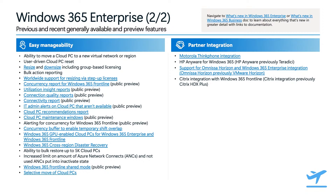We also added GPU-enabled cloud PCs to our lineup across Windows 365 Enterprise and frontline. We released a powerful cost management tool for endpoint admins with resize and downsize capabilities in Windows 365, now with support for group-based licensing as well as support for resize through step-up licensing. Our reporting and alerting capabilities were enhanced across many dimensions, including connectivity, availability alerting, utilization insights, and even cloud PC recommendations that help IT admins choose the right configurations for their end users.